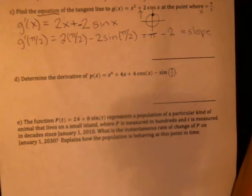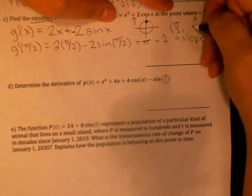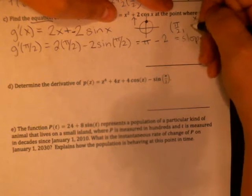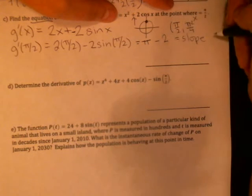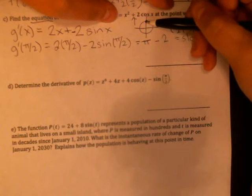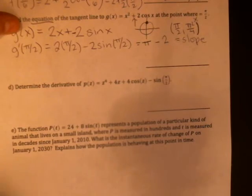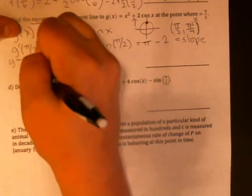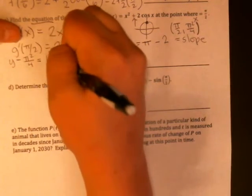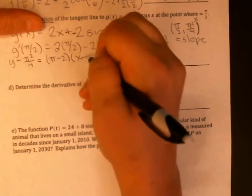We also need, I don't think I left myself room. We also need the y coordinate of our point. So our point has an x coordinate pi over 2. Its y coordinate has to come from the original equation. So we're going to have a pi over 2 squared, which is a pi squared over 4. And then cosine of pi over 2 is 0. So the 2 cosine pi over 2 actually goes away. So this is going to look like y minus pi squared over 4 is equal to pi minus 2 times x minus pi over 2.